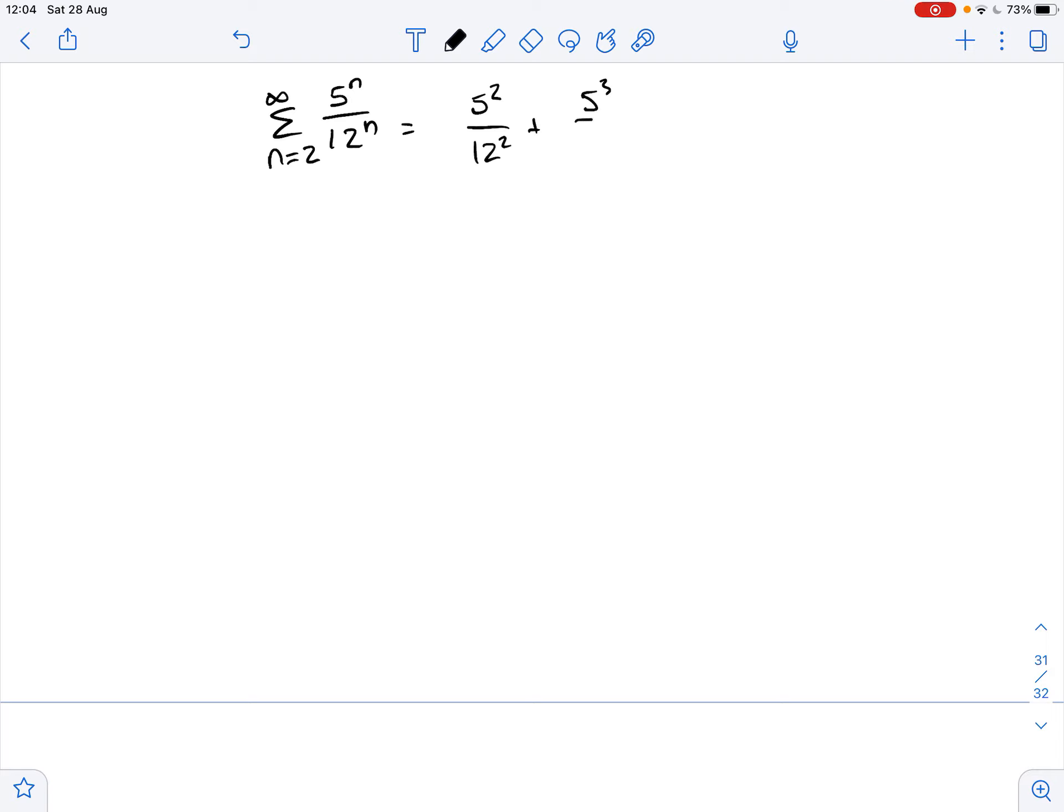It equals 5 squared over 12 squared plus 5 cubed over 12 cubed plus 5 to the fourth power over 12 to the fourth power and so on.